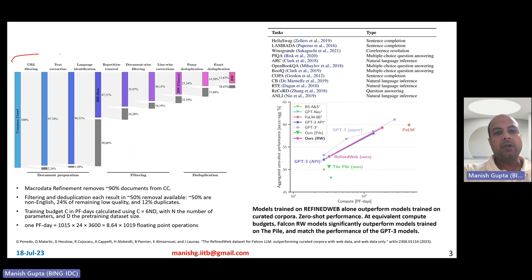So what do these steps do to the common crawl corpus? If you start with 100% common crawl corpus, document preparation sort of brings down the corpus to about 50%, filtering brings that down to about 23-24%, and then deduplication finally brings it down to about 12%. So essentially the overall 5 trillion corpus that has been obtained essentially is about 12% of the overall common crawl. This entire pipeline, they call it as a macro data refinement pipeline and it removes about 90% of the documents from common crawl. Filtering and deduplication each result in about 50% removal, 50% are non-English. What you observe is that language identification leads to a lot of documents being removed. 24% are low quality, basically just bad quality documents, and about 12% are duplicates which are also removed.